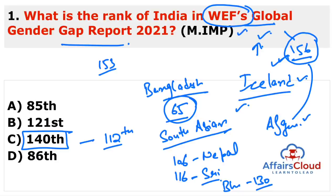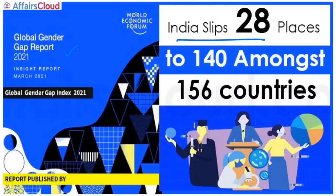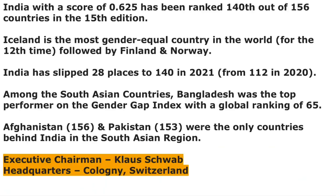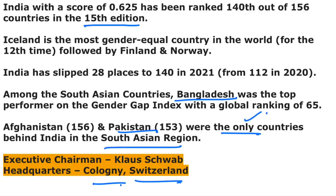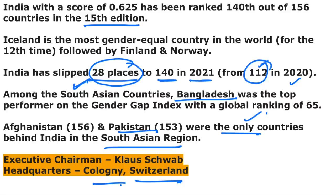Remember: this is the 15th edition of the Gender Gap Report published by the World Economic Forum, headquartered in Cologne, Switzerland. India slipped 28 places to 140th among 156 countries. Iceland is first, Finland is second, and Norway is third. Out of 15 editions, Iceland topped 12 times. Afghanistan and Pakistan were the only South Asian countries behind India. This is a UPSC-level question — India's rank was 112th in 2020 and slipped to 140th in 2021.